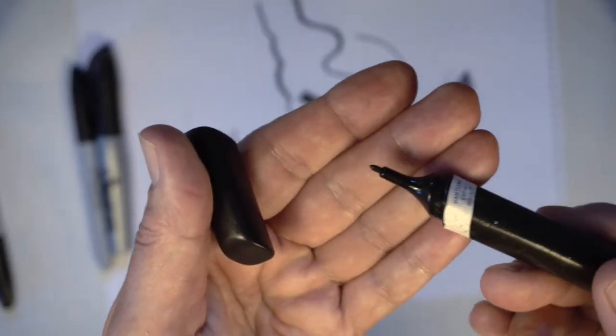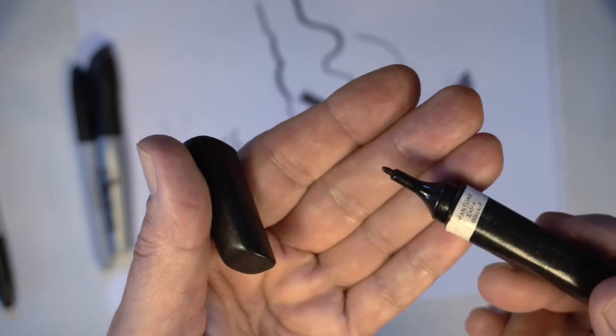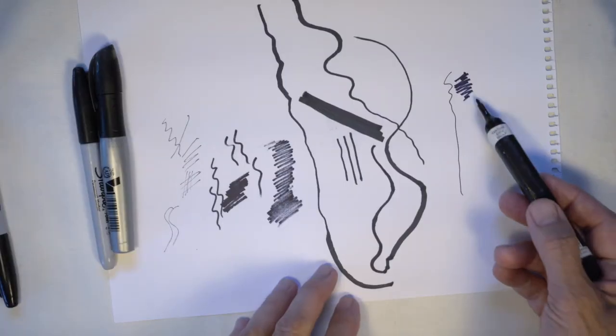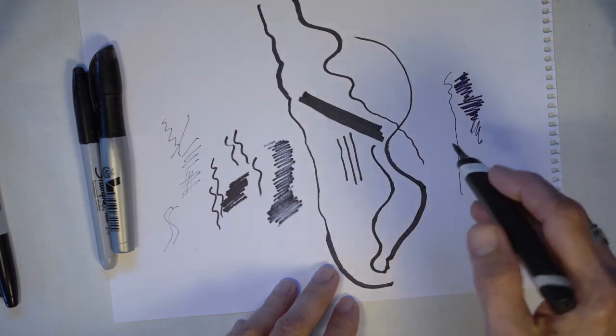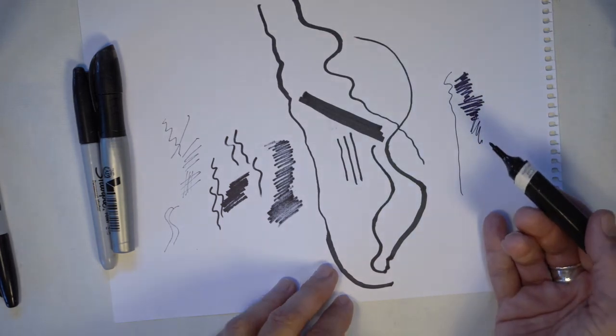But because of the style of nib that this has, I can also use it sideways and use it for shading. So a lot of these markers are quite flexible, and you can do more than one thing with it.